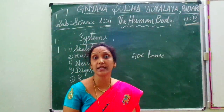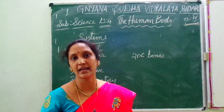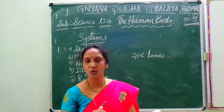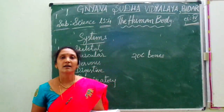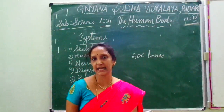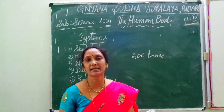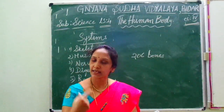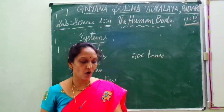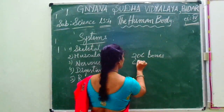There is much to read and know, but in our syllabus of 4th class, you should know that there is a system called the skeletal system in our body. Next is the muscular system. The muscular system consists of all the 639 muscles in our body.